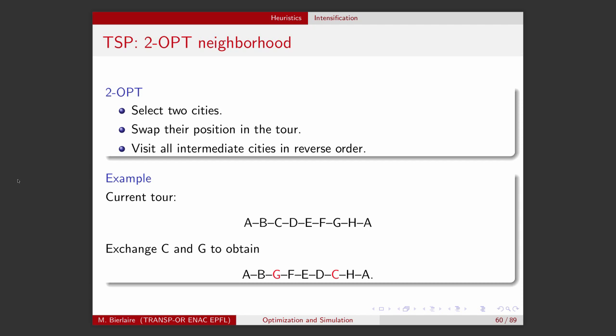Let's take an example. The current tour is A, B, C, D, E, F, G, H, back to A. We select two cities: C and G. We swap them, so we will have G in C's position and C in G's position, and everything else will be in reverse order.